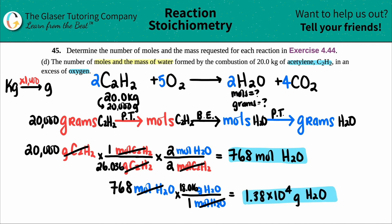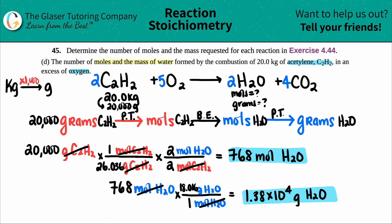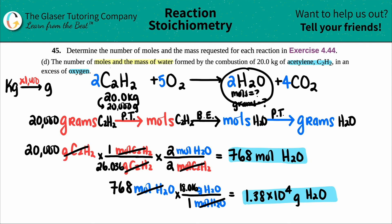To put it in context: starting with 20 kilograms (20,000 grams) of acetylene, you produce either 768 moles of water or 1.38 × 10⁴ grams of water. It's like saying if you had 20 cups of flour you'd produce a certain number of cookies — same idea. Let me know in the comments if this helped, subscribe as we're almost at 10k. Thanks for your support, keep studying hard, and I'll see you in the next lesson.